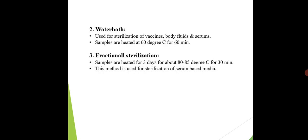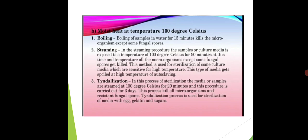Third is fractional sterilization. In this method, samples are heated for three consecutive days at 80 to 85°C for 30 minutes each day. This method is used for the sterilization of serum-based media — the media in which serum is used to grow organisms, similar to how nutrient media is used for bacteria.